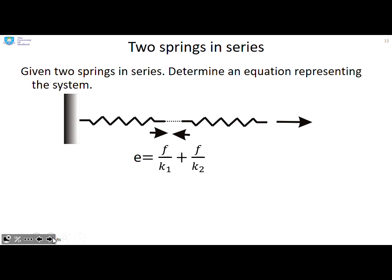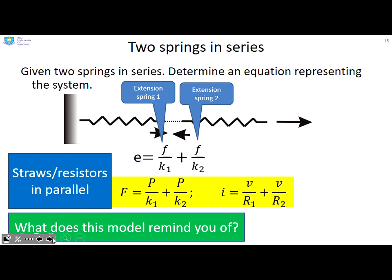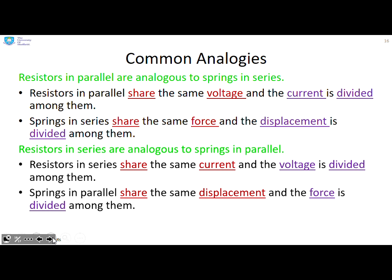What about two springs in series then? Here the springs are going to share the same force. You get the extension in spring one and the extension in spring two. The key thing here is what does this model remind you of? It reminds you of straws and resistors in parallel. Can you see that this equation here has the same structure as this equation here and this equation here? They're analogous systems. Common analogies are things like resistors in parallel are analogous to springs in series because resistors in parallel share the same voltage and current is divided. Springs in series share the same force and displacement is divided. Similarly, resistors in series are analogous to springs in parallel because resistors in series share the same current and voltage is divided. And springs in parallel share the same displacement and the force is divided.